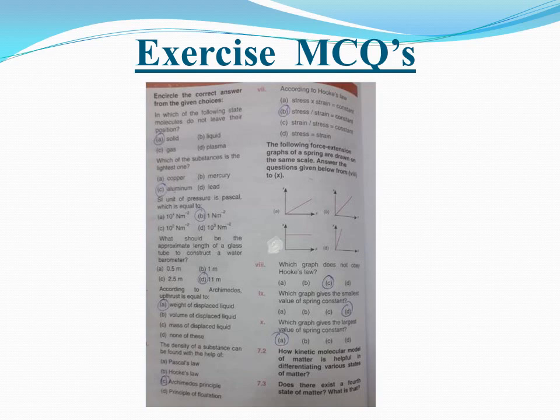Pressure formula is force per unit area — force in newtons, area in meter squared — so the unit is 1 N/m². Next question: what should be the approximate length of a glass tube to construct a water barometer? The correct length is 10.34 m, which is not listed, so the closest option is 11 m. According to Archimedes' principle, upthrust equals the weight of displaced liquid — option A is correct. The density of a substance can be found using Archimedes' principle.